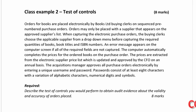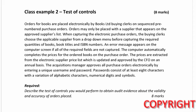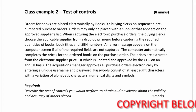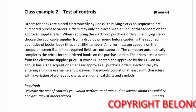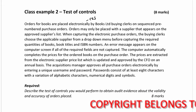Class example two: test of controls. Orders for books are placed electronically by Books Limited's buying clerks. This shows that there is a computer information system in place.